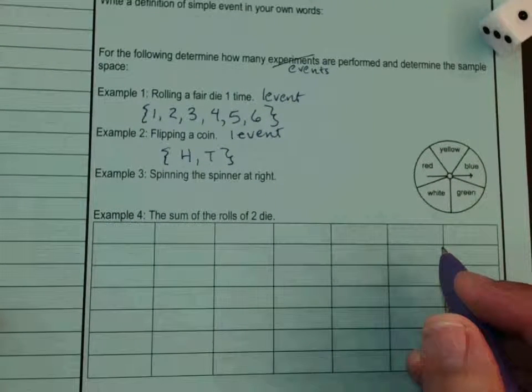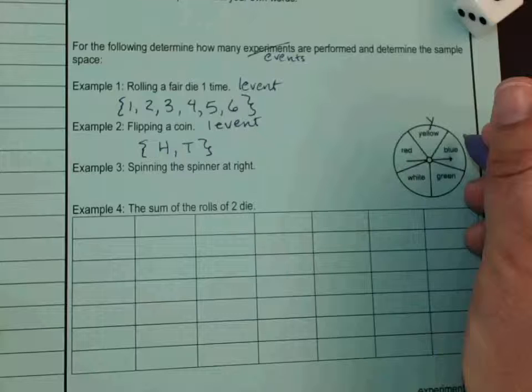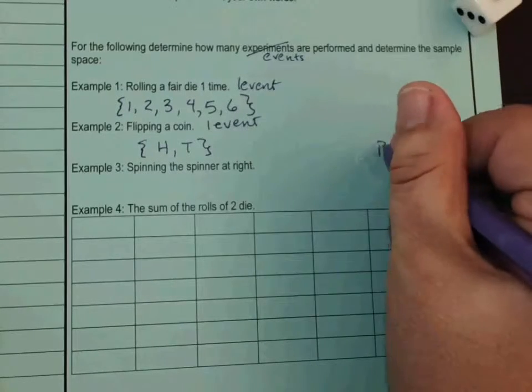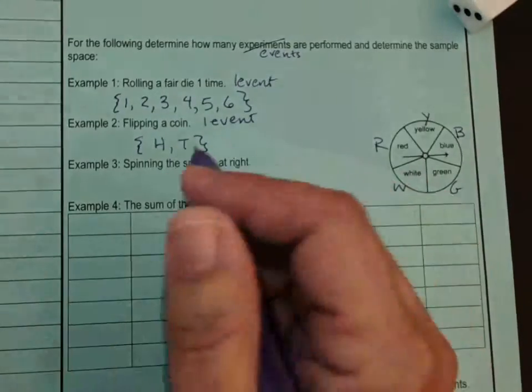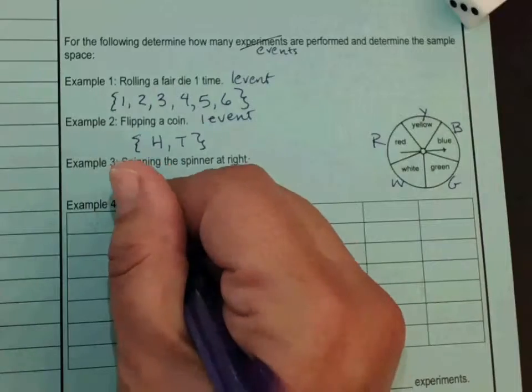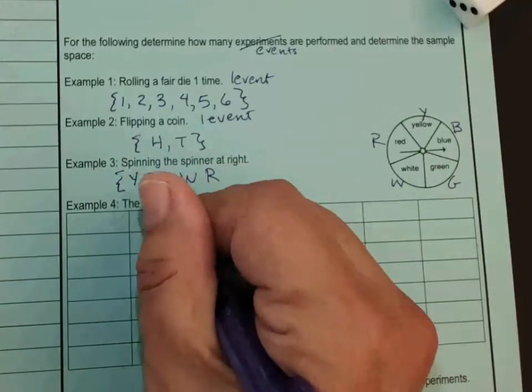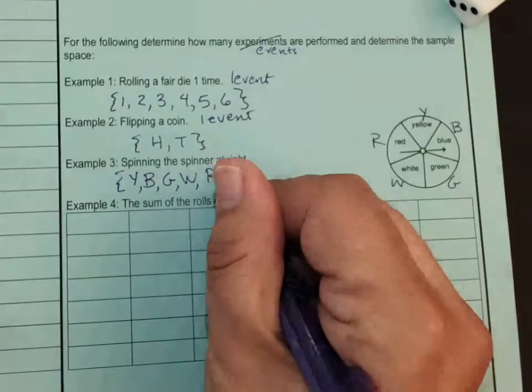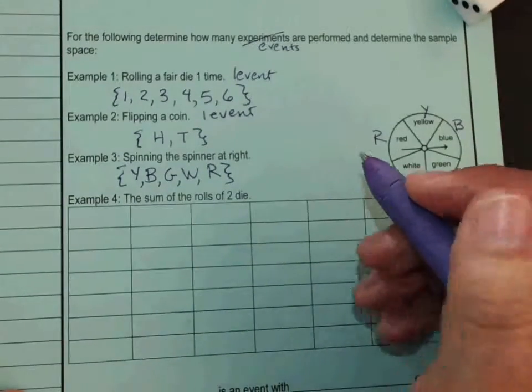Spinning the spinner at right. Well, I'm a little lazy. I don't feel like I'll just write B for green, W for white, and R for red. If they had the same initial, I could do two letters. But I prefer the caps again for my sample spaces, so I'll say it's yellow, blue, green, white, and red. I better put commas between these. By the way, if you're doing a WebAssign assignment and you don't have a space between your commas, it tends to freak out. Okay, and this is also one event.